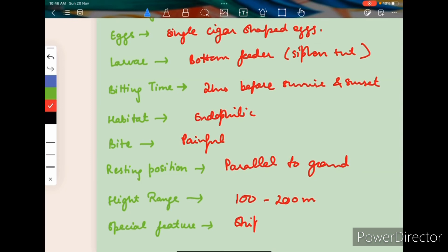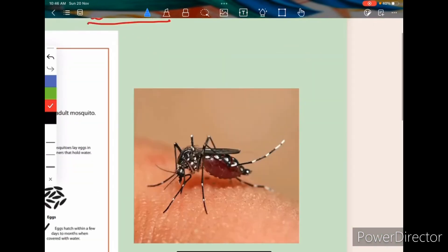And it sits parallel to the ground, parallel to ground. Flight range is very small, 100 to 200 meters only. And it has got stripes on legs and body, stripes on legs and body. That is why this is also known as a tiger mosquito.